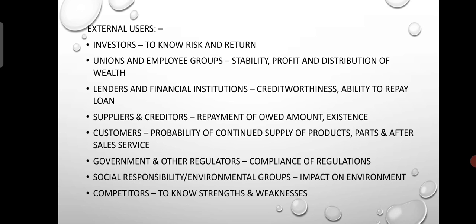The next external users are Competitors. Competitors are external users who look at a company's financial statements to check how much a company can sell a product, what its strengths and weaknesses are, and how profitable it is. Competitors use combined financial statements for comparison.